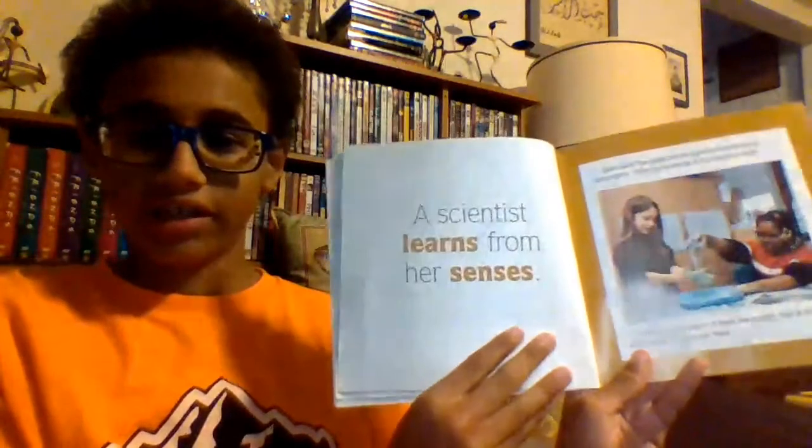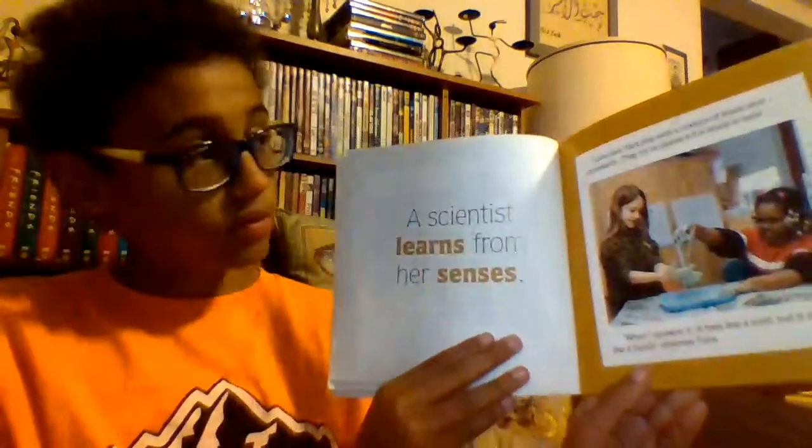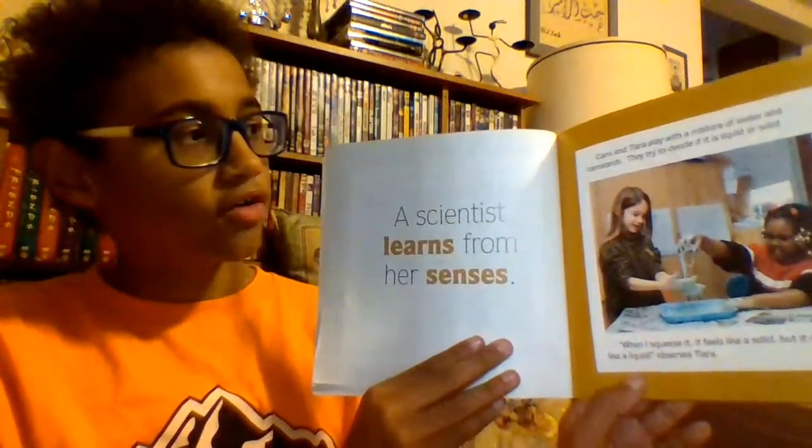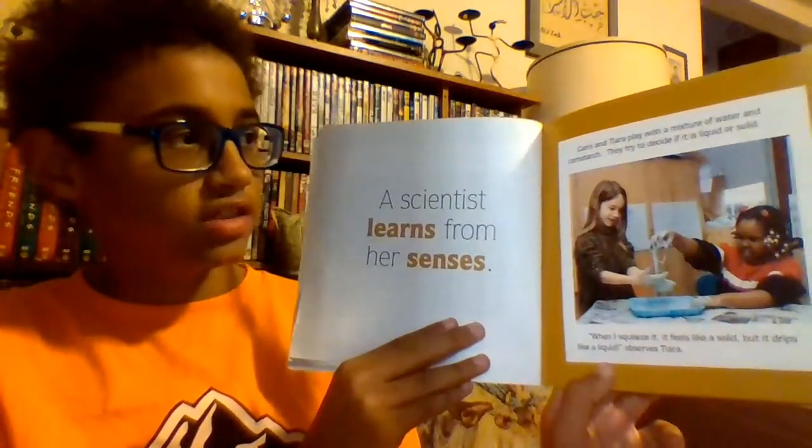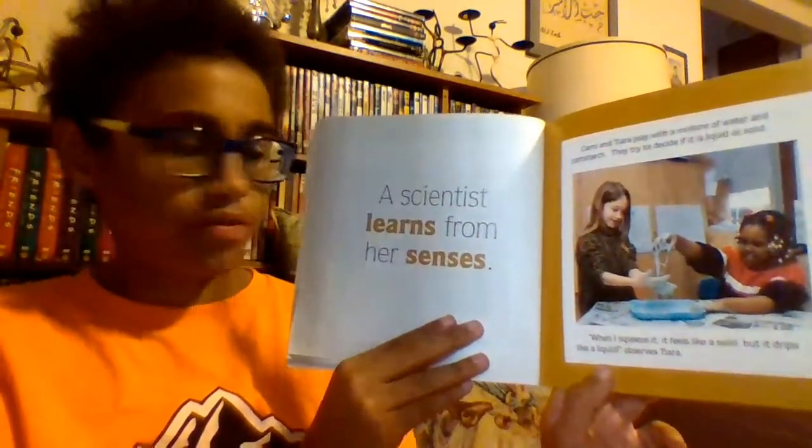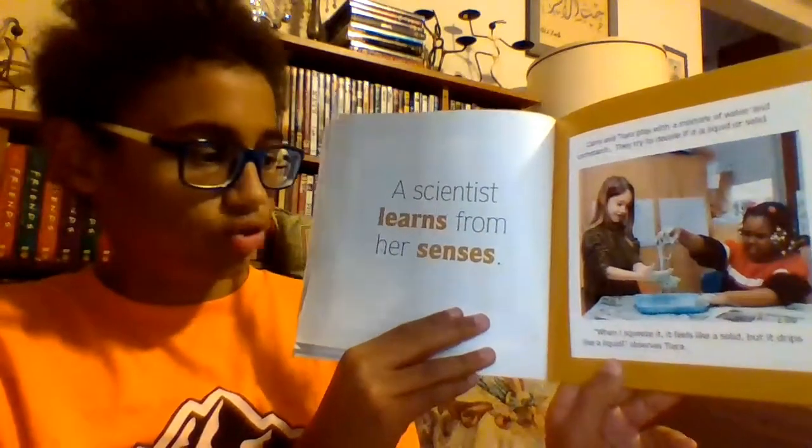A scientist learns from her senses. Cammie and Tiara play with a mixture of water and cornstarch. They try to decide if it's liquid or solid. 'When I squeeze it, it feels like a solid, but it drips like a liquid,' observes Tiara.